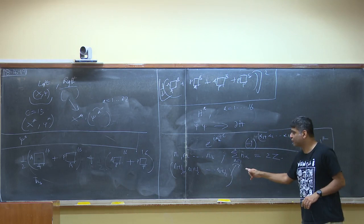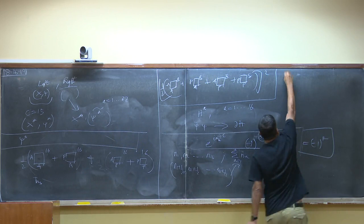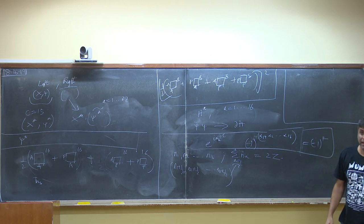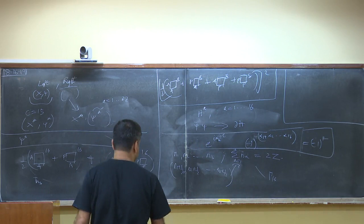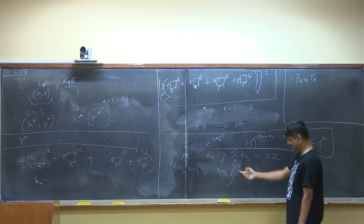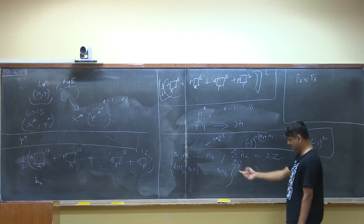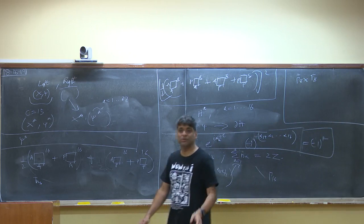This lattice has a name: mathematicians call it Γ₁₆. The other construction gives Γ₈ × Γ₈, where Γ₈ is the same definition with 16 replaced by 8. So we have two possible lattices. Let us now take these lattices and understand their group-theoretical meaning.